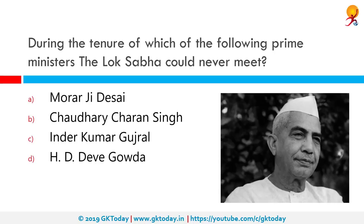During the tenure of which prime minister did the Lok Sabha never meet? That would be Chaudhary Charan Singh, who served as the 5th Prime Minister of India between 28th July 1979 and 14th January 1980 — less than six months.